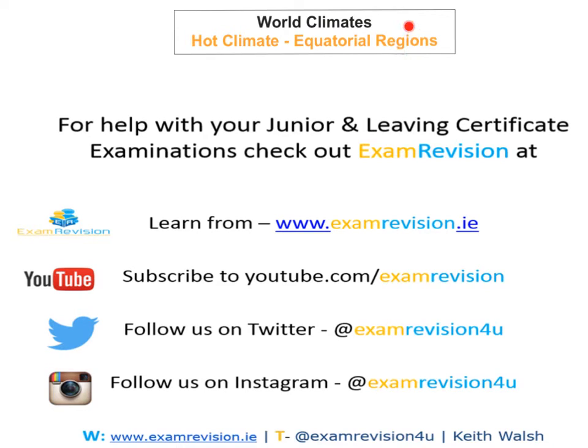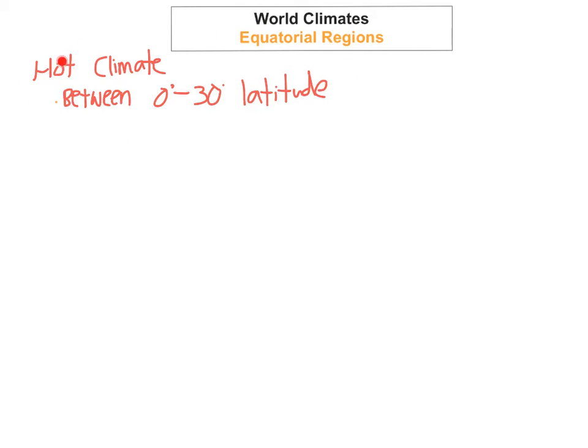We're going to focus in good detail on the equatorial region, and this is a hot climate. Hot climates are found between 0 and 30 degrees of latitude, north and south of the equator, and they spread out from the equator to the tropics. They're made up of the equatorial region, the hot desert, the savannah, and the monsoon climates. But the one we're going to focus on is the equatorial region.